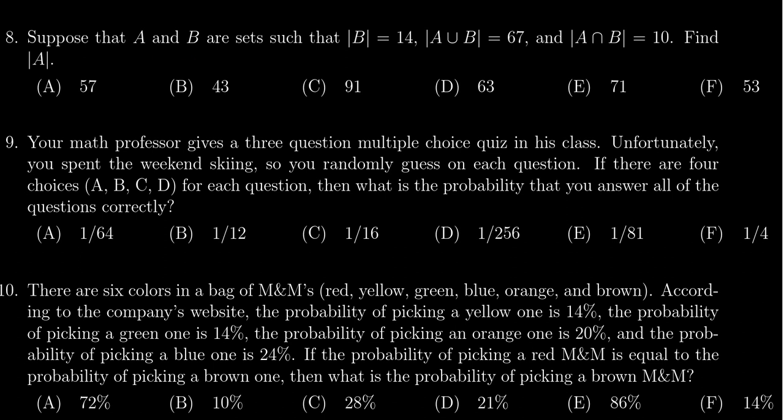By the inclusion-exclusion formula, we have that the cardinality of the union is equal to the cardinality of A plus the cardinality of B minus the cardinality of the intersection.